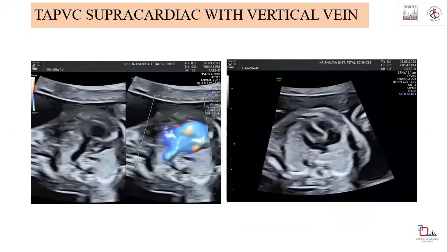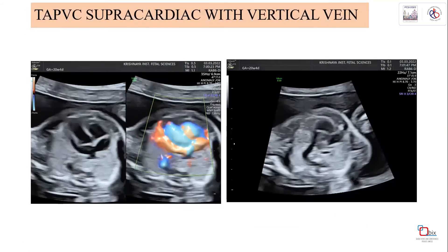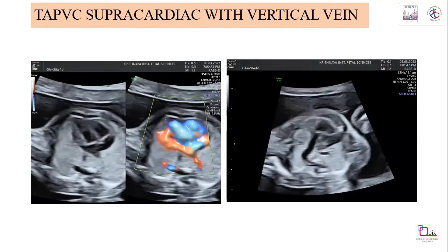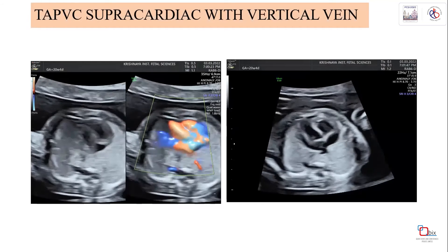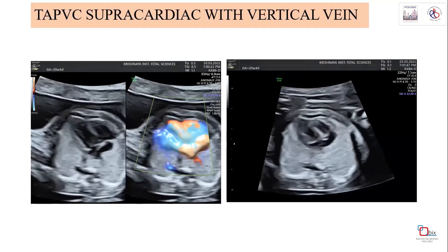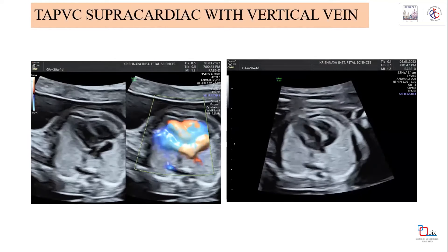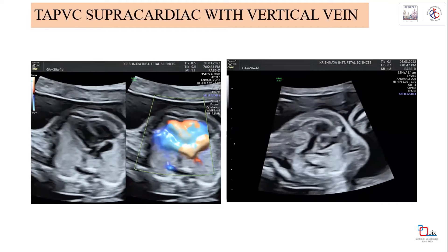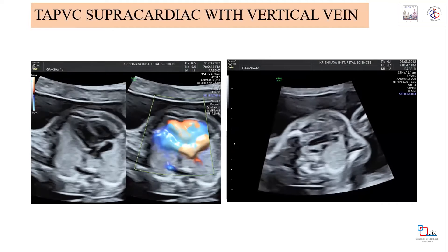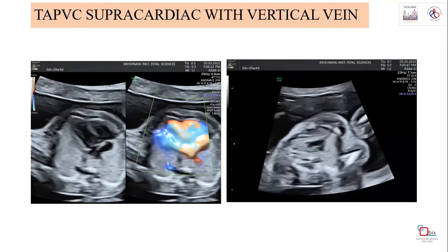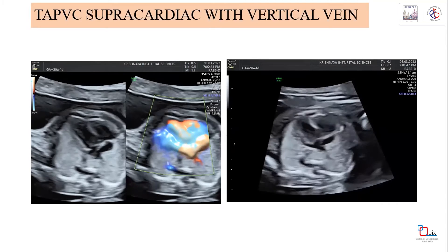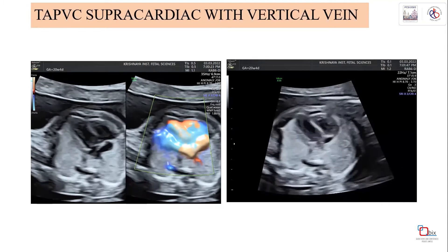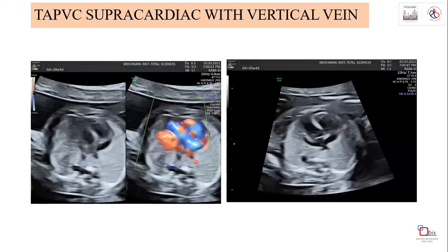This is a case of TAPVC with a vertical vein draining directly from the right atrium to the brachiocephalic vein, which can be clearly seen on color Doppler. Color Doppler provides a wealth of information that supports assessment, counseling, and comprehensive patient information.